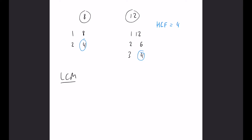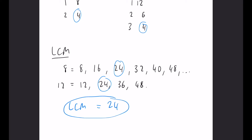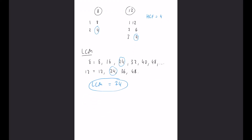Now let's find the lowest common multiple. All it takes is to write out the 8 times table: 8, 16, 24, 32, 40, 48, and so on. Then the 12 times table: 12, 24, 36, 48. The first number that appears in both is 24, so the LCM is 24.